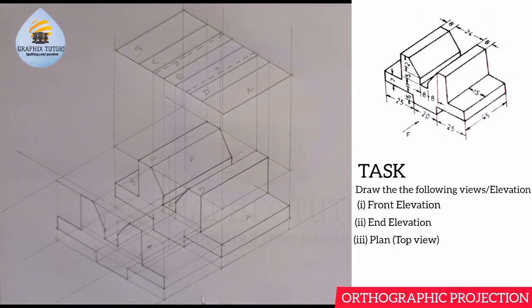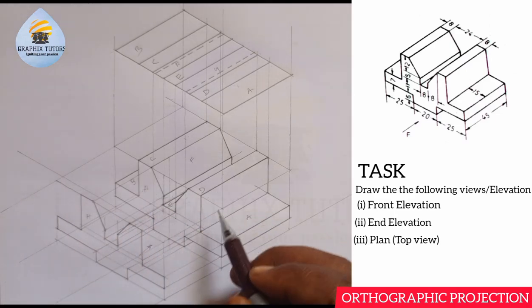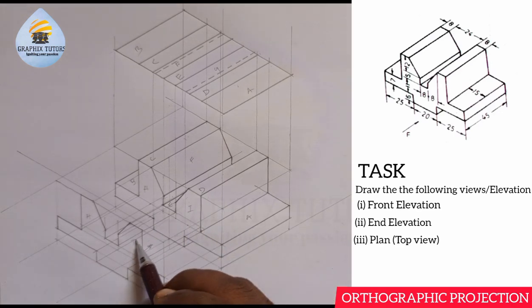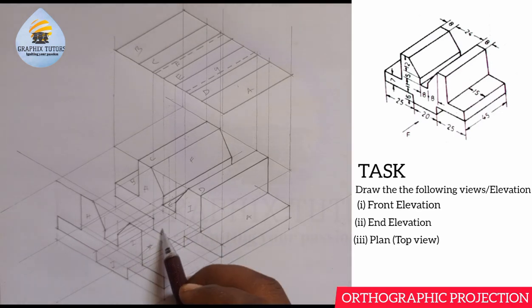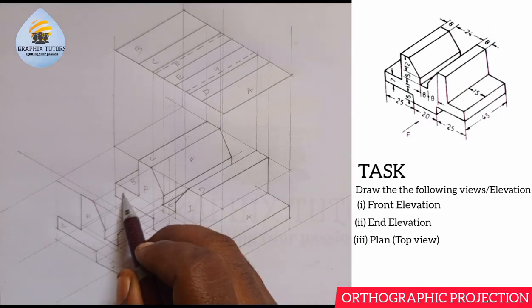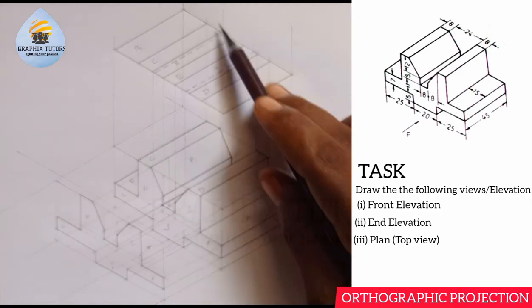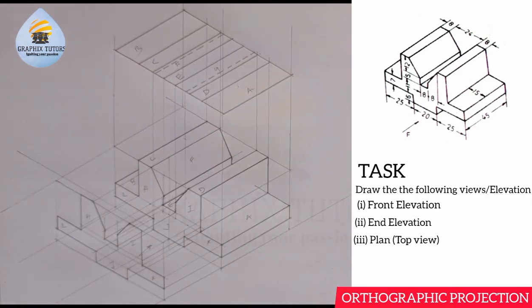We have to come in here — this is H, this is I, this is J, this is K, this is L, and so on and so forth. So this is what the plan looks like — it entails looking from the top. Now the next thing is looking from the side, which we call the end view.